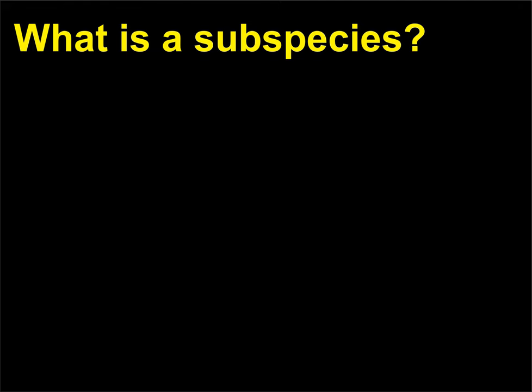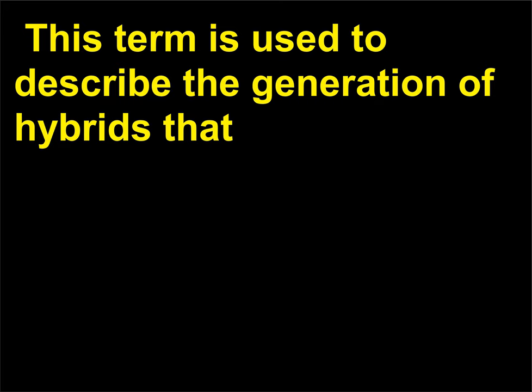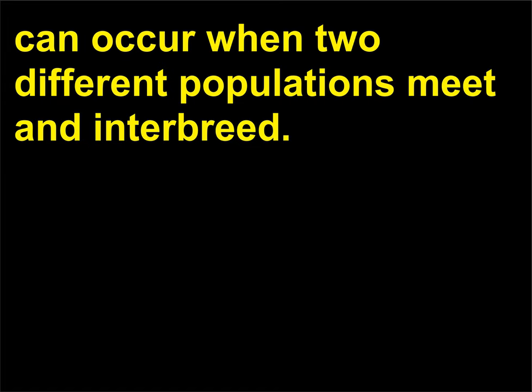What is a subspecies? A subspecies is another way of describing a distinct population or variety. This term is used to describe the generation of hybrids that can occur when two different populations meet and interbreed.